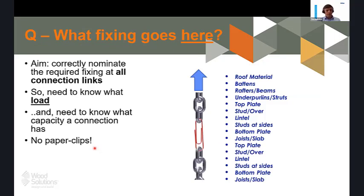With tie-down, we're trying to connect the building to the ground. The easiest way to think of it is as a chain — wind applies a load at the top, and the bottom of the chain needs to be attached to the ground. Starting at the roof material where loads are applied, the roof ties to the battens, battens to rafters, and so on all the way down through storeys to the slab. As you get deeper into the building you have more overburden, so requirements for tie-downs become less onerous — but they're still required. You want no paper clips: no weak points where the building will let go.